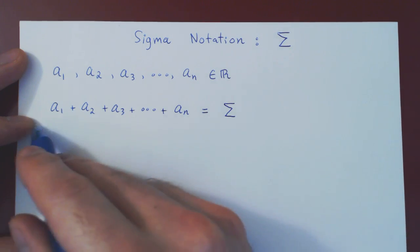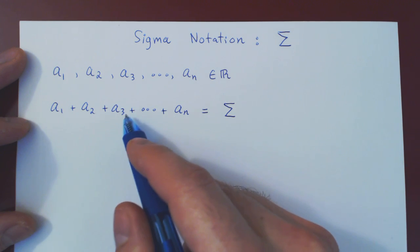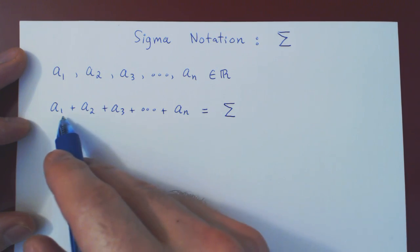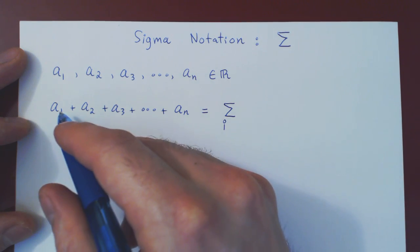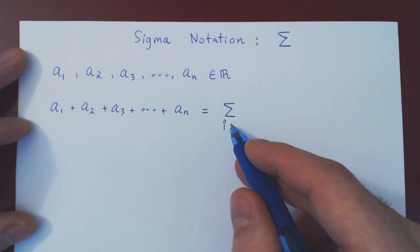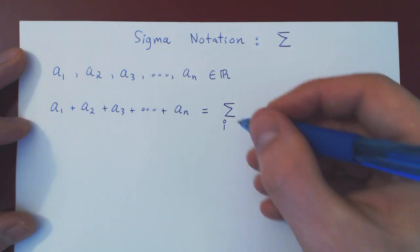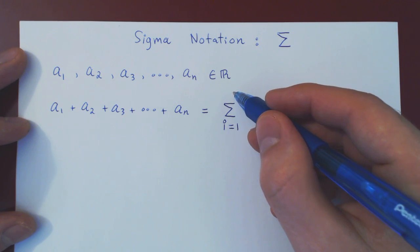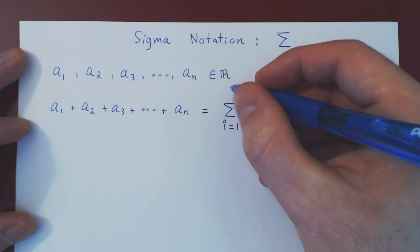We are summing — adding up terms — and we need to capture the change in the index. The index goes 1, 2, 3, up to n. We'll use what's called a dummy variable, the letter i, to capture that change. i starts at the lower bound of summation — where the summation begins — so i equals 1. The upper bound is n, where the summation ends, and it's understood that this means i equals n.